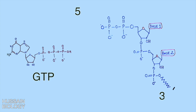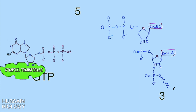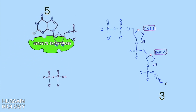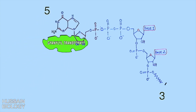In the next step, the GTP molecule is acted upon by guanylyl transferase enzyme. This transferase enzyme transfers the GMP residue from GTP to the 5' end of the pre-mRNA molecule, as shown in the animation, and ultimately we get guanosine attached to the 5' end.